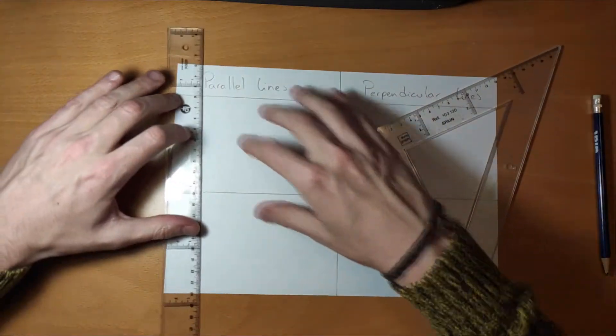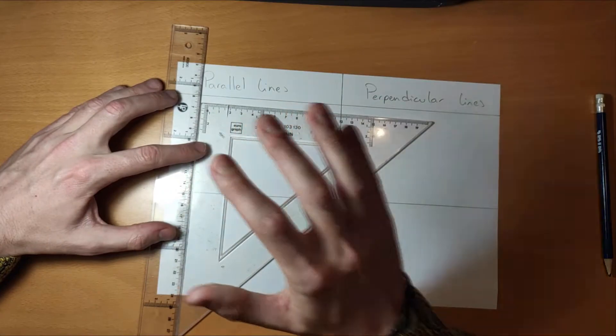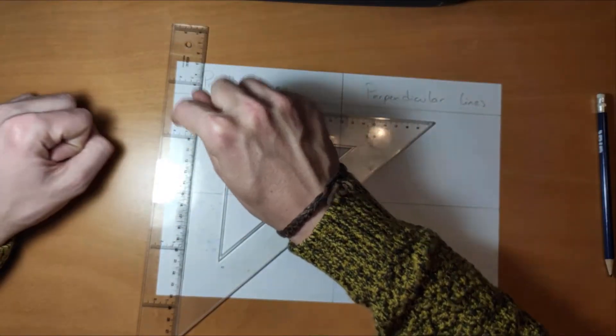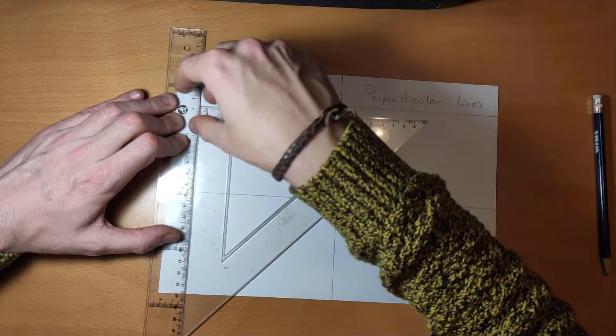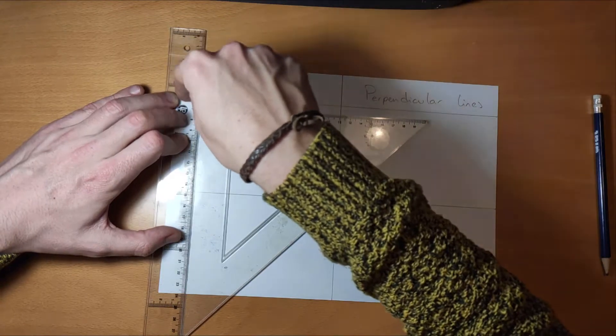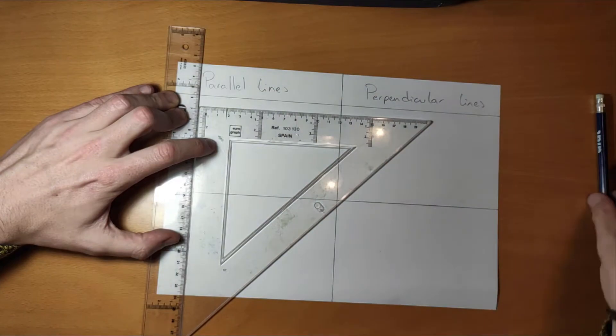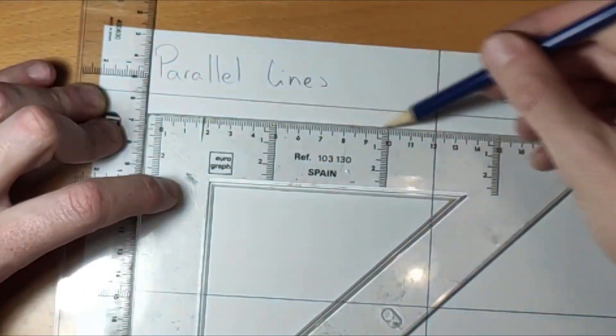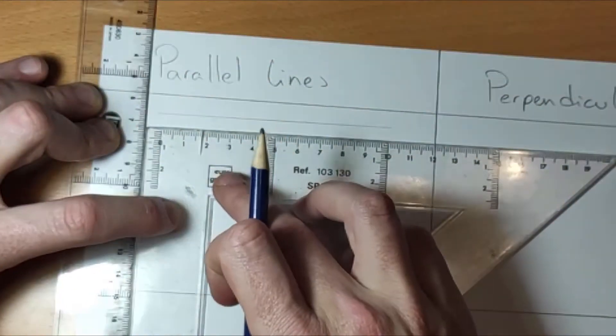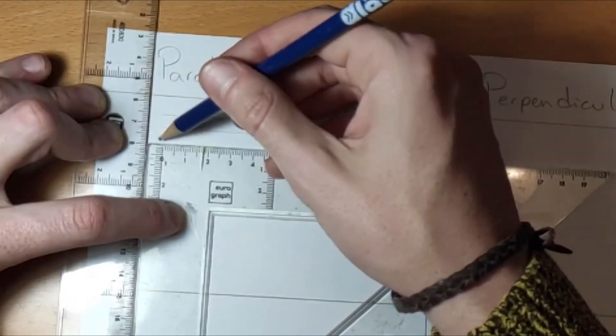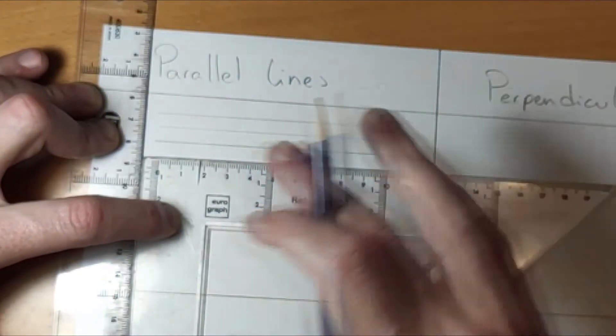We put the ruler here, the set square here. We must make sure we don't move the ruler - this is our reference. Put your fingers here, put a lot of pressure on the ruler, and obviously make sure the piece of paper doesn't move either.